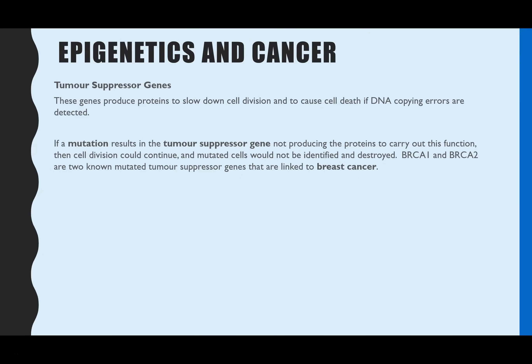Epigenetics is often linked to the development of cancer in two key ways. The first involves tumour suppressor genes — genes which code for a protein that can slow down cell division, regulating mitosis so you only produce new cells when needed for growth or repair. They can also cause cell death if a copying error is detected. If you have a mutation in a tumour suppressor gene, it results in a non-functioning protein, which is linked to cancer. Two known examples are the BRCA1 and BRCA2 genes, linked to the development of breast cancer.